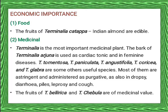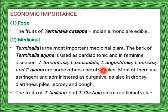Economic importance of family Combretaceae. First, food: the fruits of Terminalia catappa, the Indian almond, are edible. Second, medicinal: Terminalia is the most important medicinal plant. The bark of Terminalia arjuna is used as a cardiac tonic — drugs used to increase the efficiency and improve the concentration of heart muscle — and in feminine disease to cure fibroids. Terminalia tomentosa, Terminalia paniculata, Terminalia angustifolia, Terminalia coriacea, and Terminalia glabra are some other useful species.